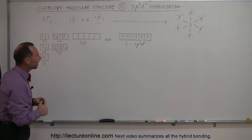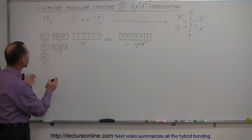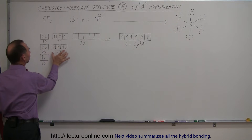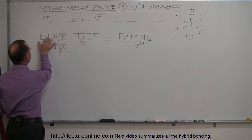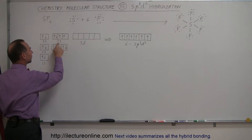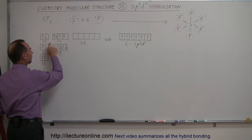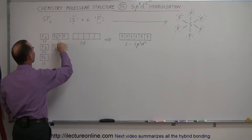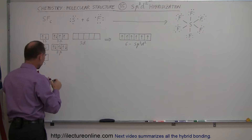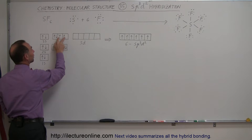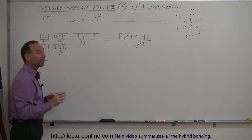Now how does that happen? If you look at the electron structure of sulfur, we see that the 1s orbital is filled, the 2s orbital is filled, the 2p orbitals are filled, and the 3s orbital is filled. The 3p orbitals are almost filled — one of them is completely filled, and the other two have one electron in them.